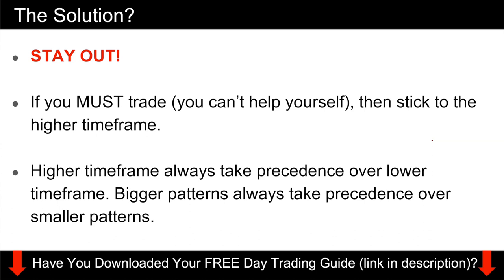Think of it this way. If the daily is bullish, that means people who are trading on the day charts are going to be buying. If the H4 is bullish as well, that means the people trading the H4 are also going to be buying. And if the H1 is bullish as well, that would mean the H1 traders are also going to buy. So in this kind of scenario, that is where you find your highest probability trades, because all three time frames - whoever trades those time frames - are going to be buying. So these are the kind of trades that you want to take. In short, the solution is actually to stay out.